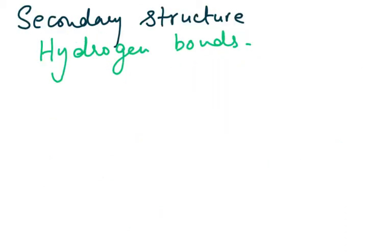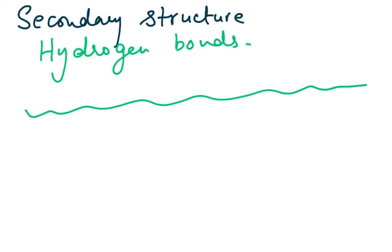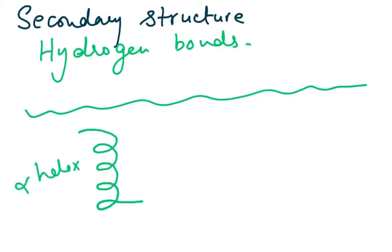Once the primary structure is formed we get a polypeptide chain. The secondary structure describes how this polypeptide chain folds. If it folds in a spiral manner it is called the alpha helix, and it is due to hydrogen bonds between the first and the fourth amino acid.